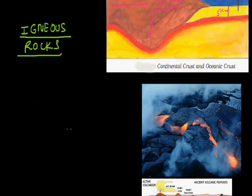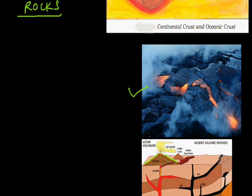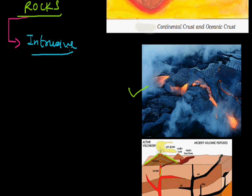The first type of rock is Igneous rocks. As you can see in this volcanic picture, this is lava coming out. When magma comes out and flows on the earth's surface, it cools down and becomes hard. This is known as igneous rocks. We can divide igneous rocks into two parts: the first one is Intrusive Igneous rocks.